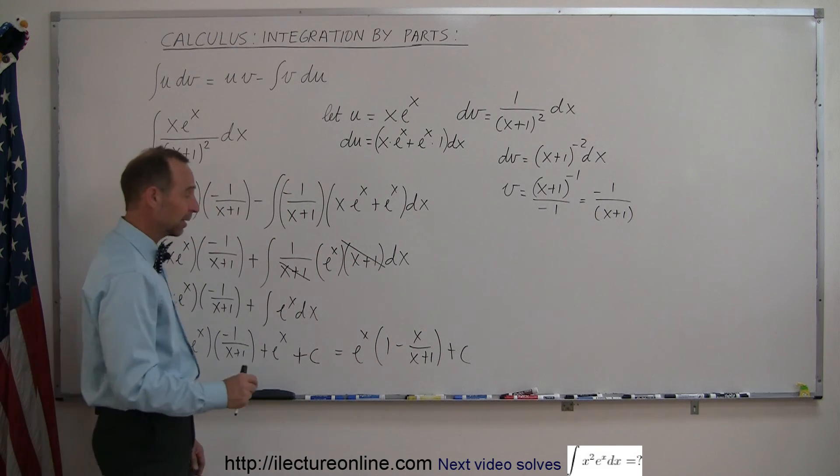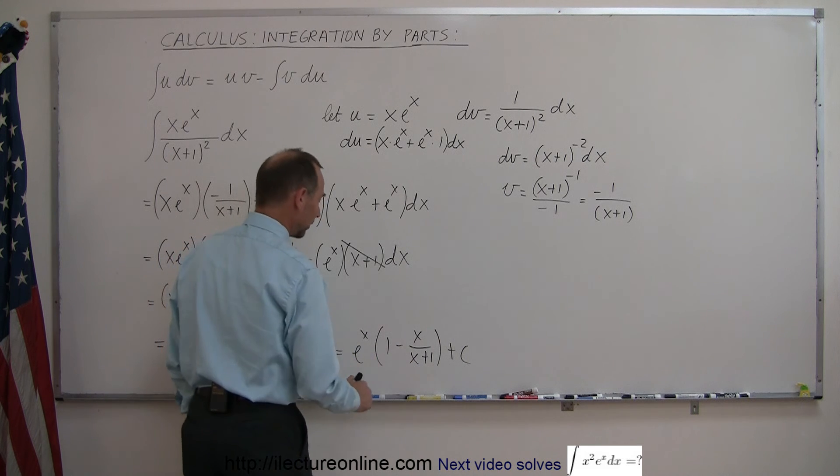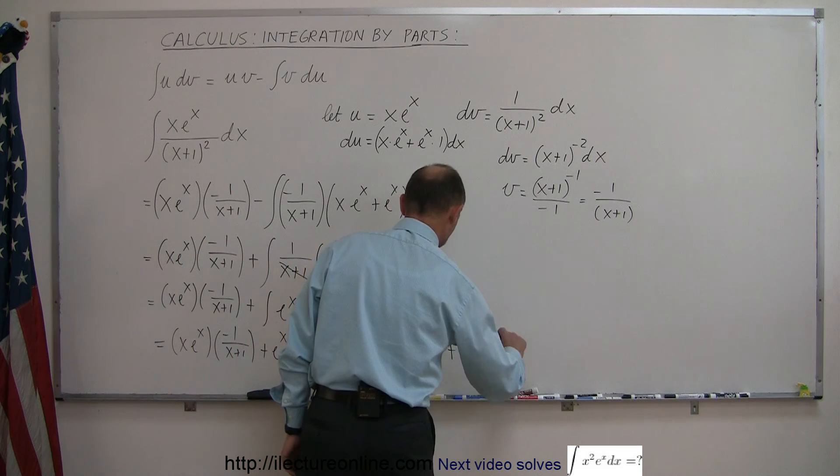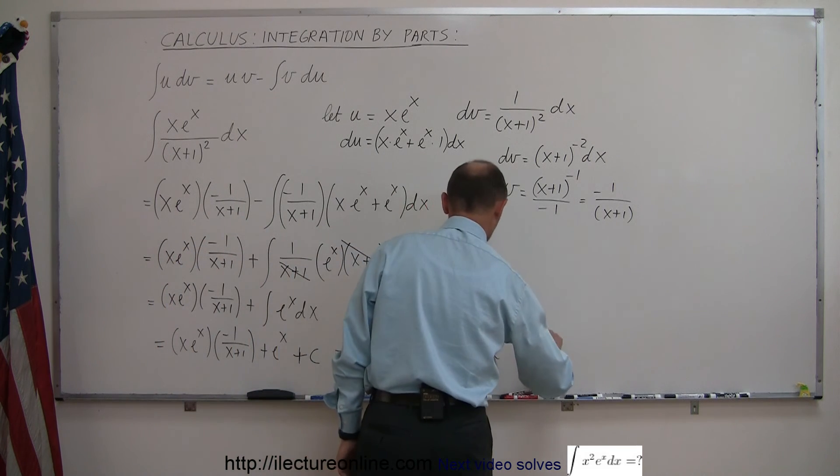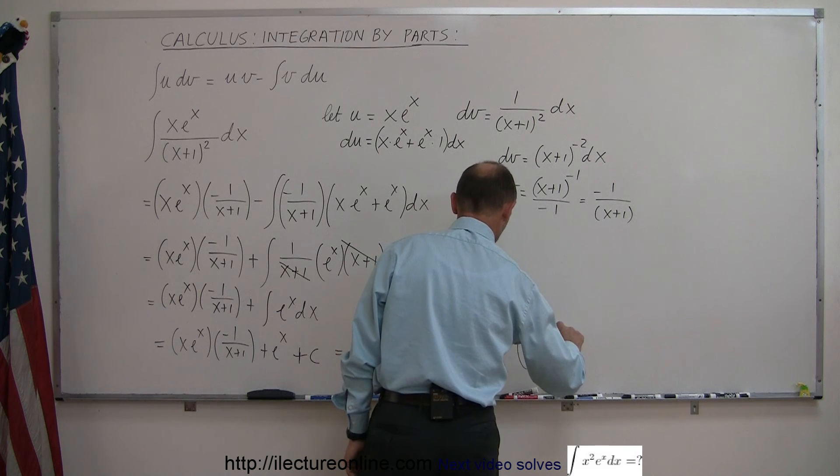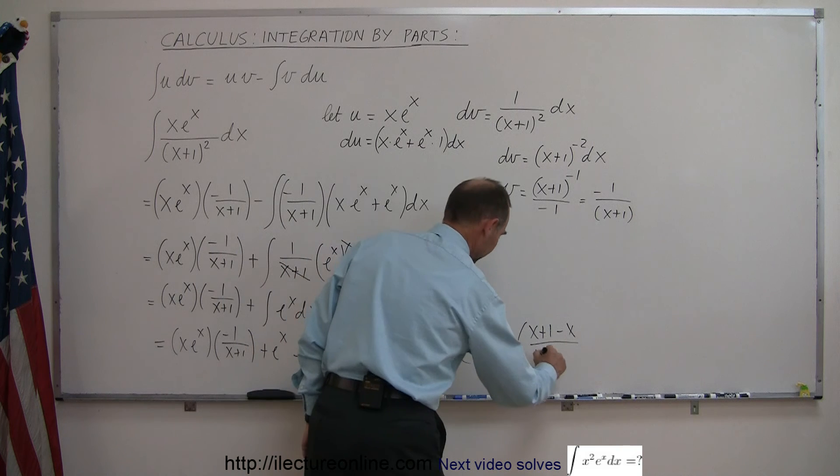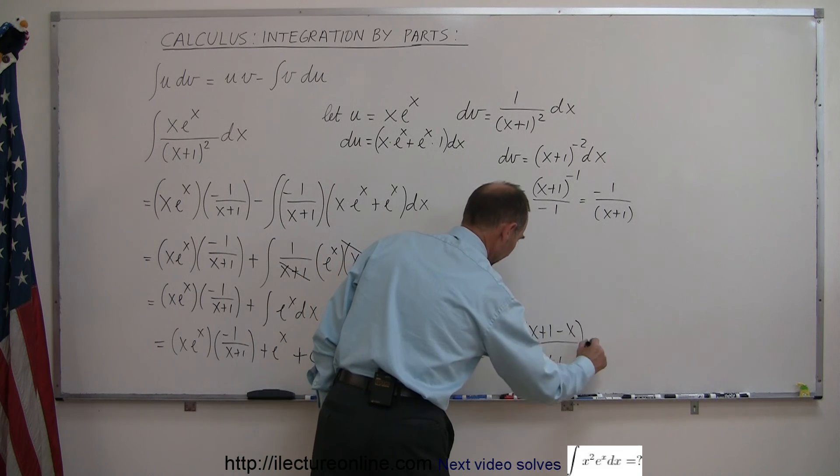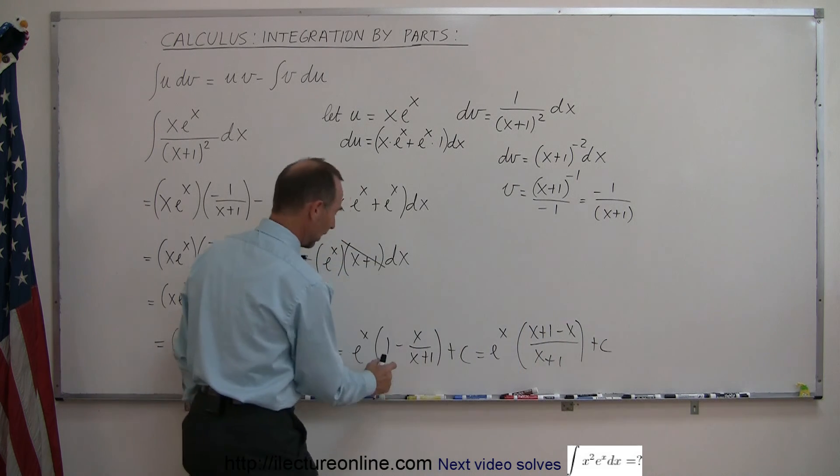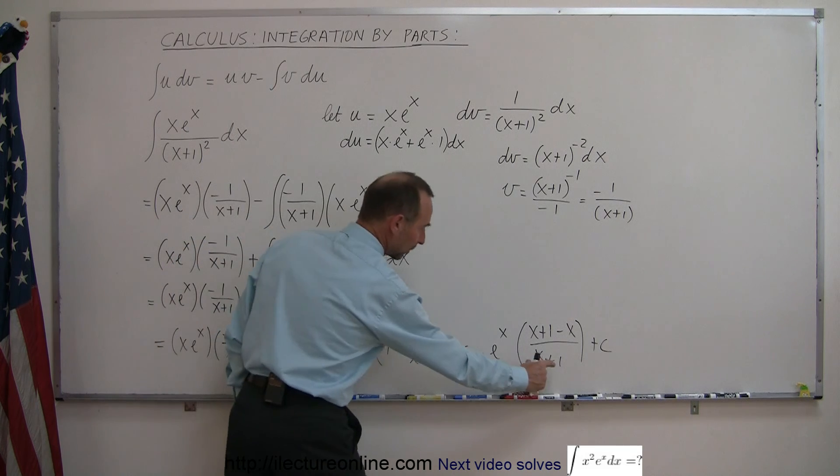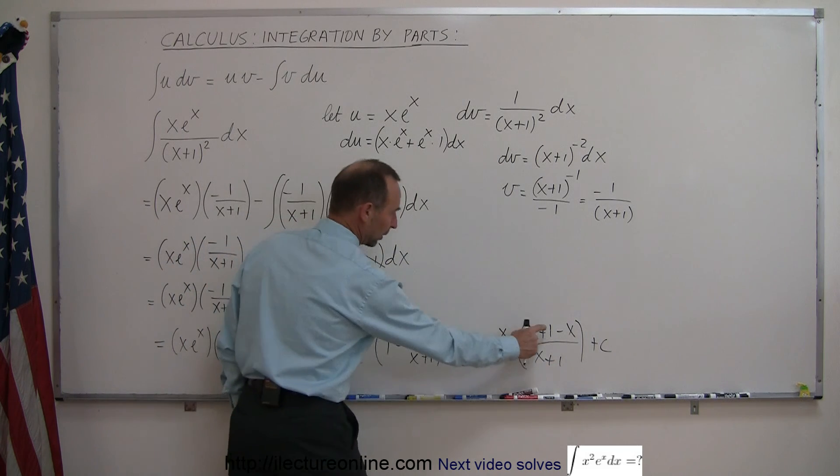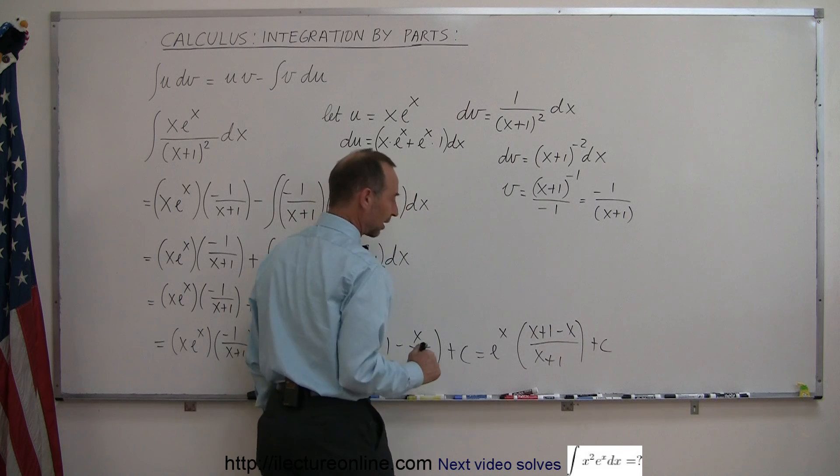Now of course we can simplify that probably a little bit more by using the common denominator, so this could probably be written as e to the x times x plus 1 minus x over the common denominator of x plus 1 plus c. Notice that if I write this as x plus 1 over x plus 1, I have a common denominator of x plus 1, and then the x plus 1 here, I can now subtract the minus x.